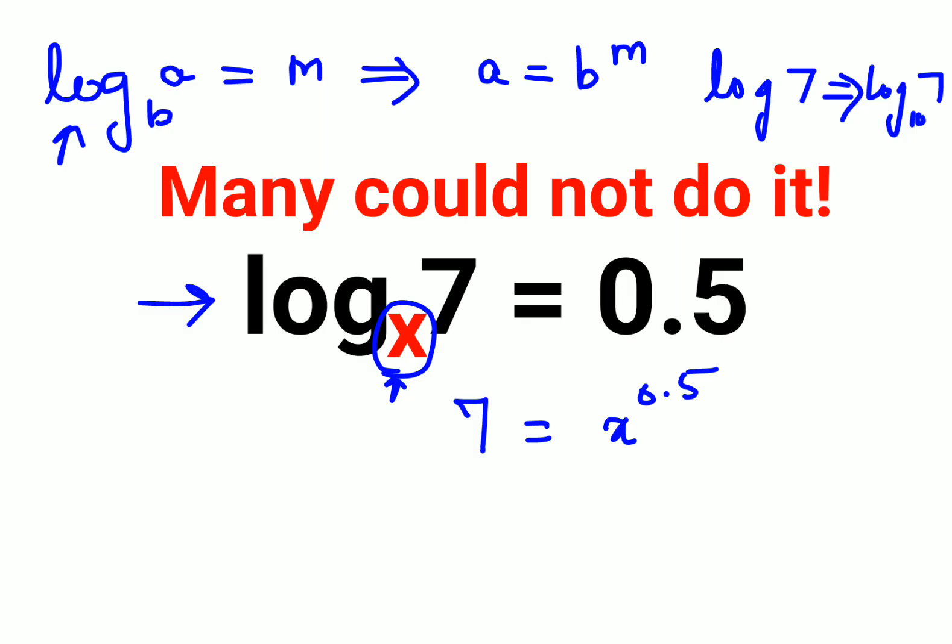When there is no base given that means the base is 10. It is as good as writing 7 is basically 7 raised to 1. We don't keep writing raised to 1 every time. So whenever there is nothing given as a base it is taken as 10.